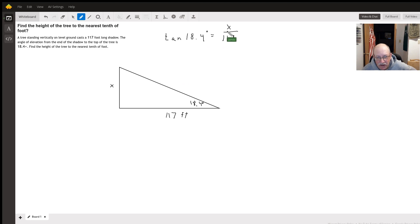We have tangent of 18.4 degrees equals x over 117. Multiply both sides by 117.